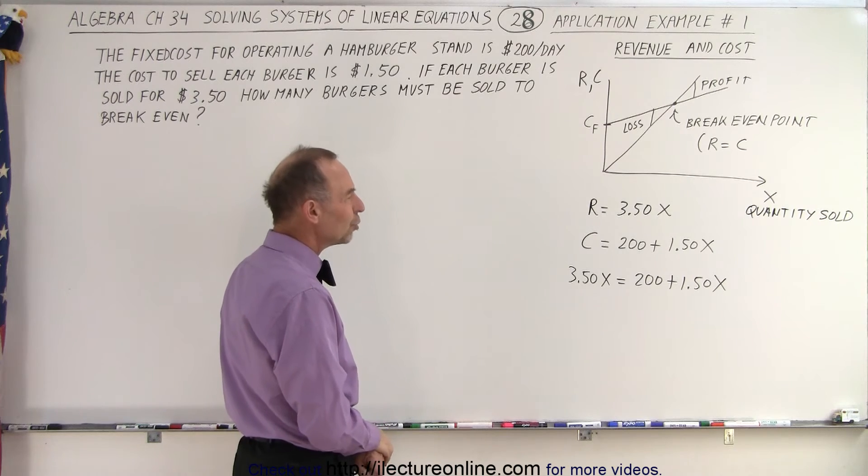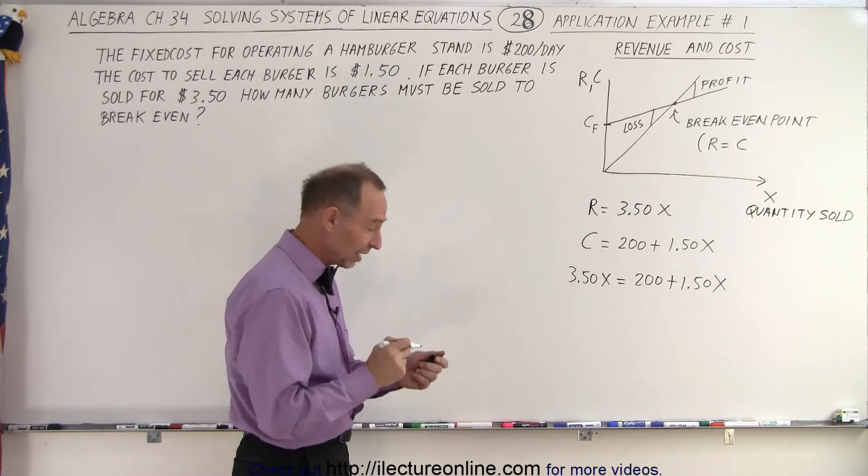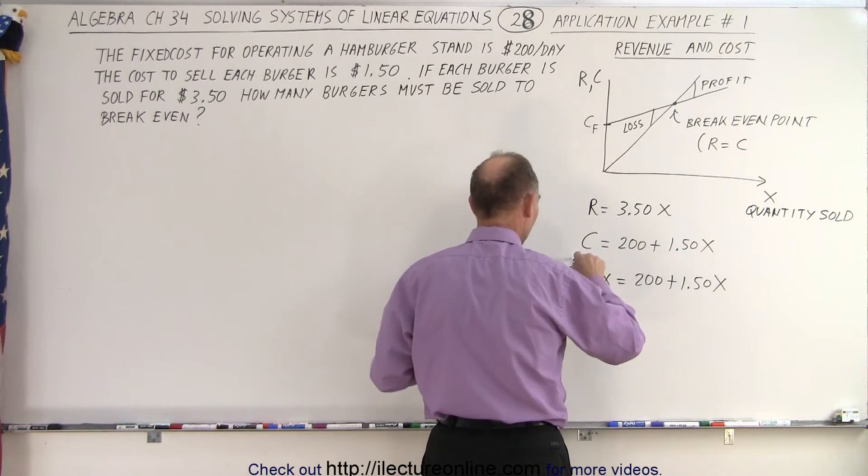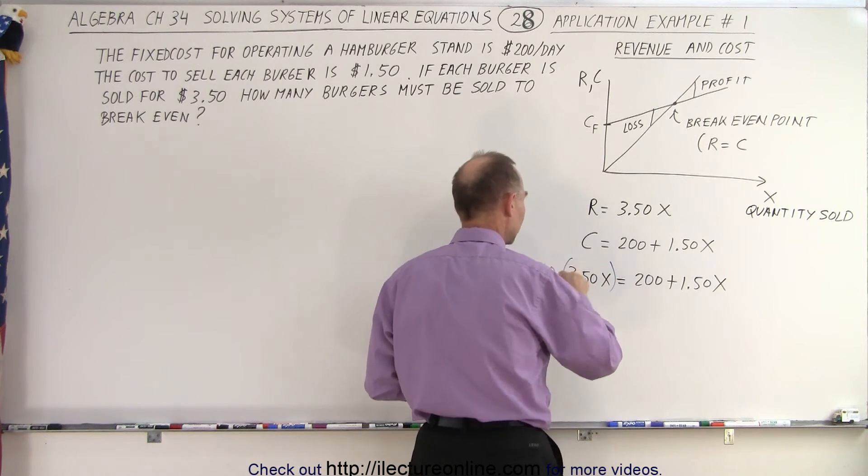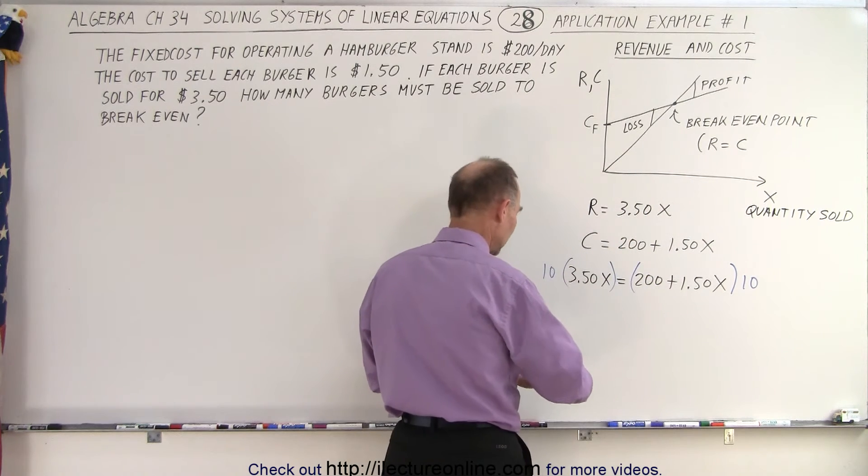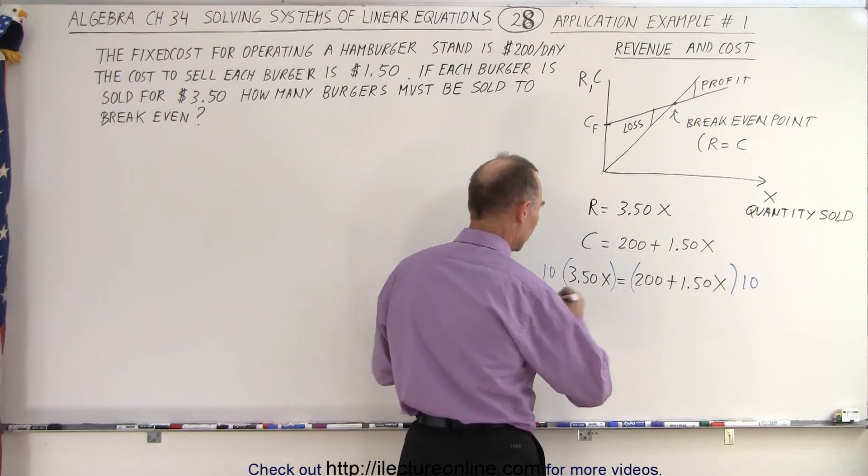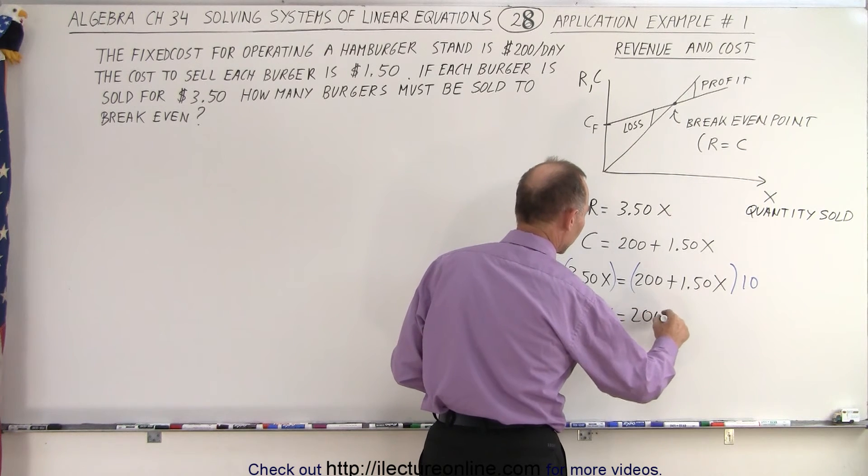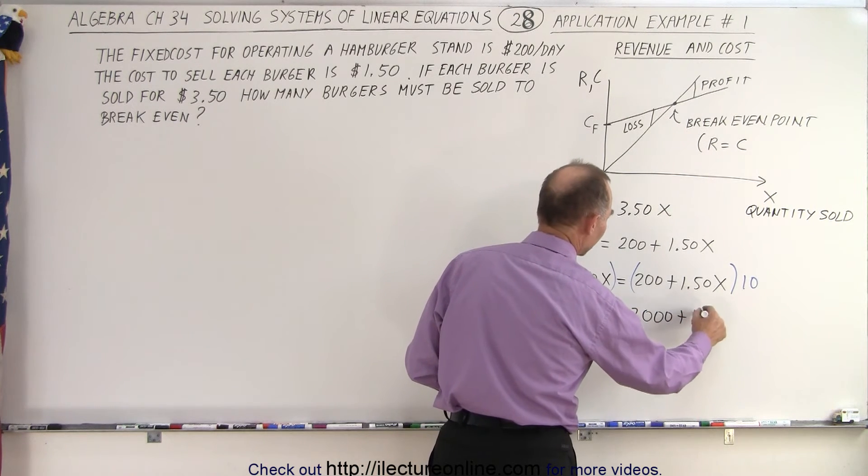So the first thing we probably want to do is multiply both sides by 10 to get rid of the decimal. That's always a good thing to do. So let's go ahead and multiply the left side by 10, and let's multiply the right side by 10. So when we do that, on the left side, we get 35x is equal to 2,000 plus 15x.